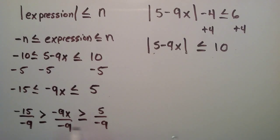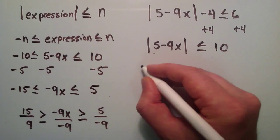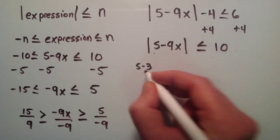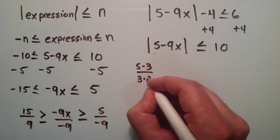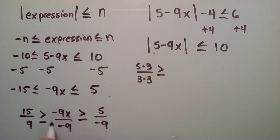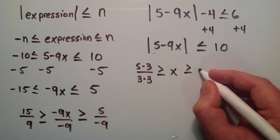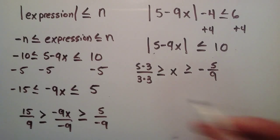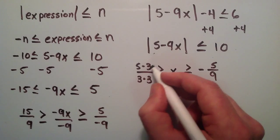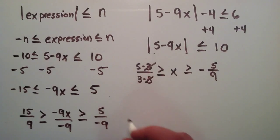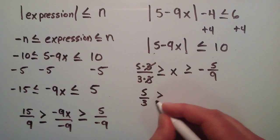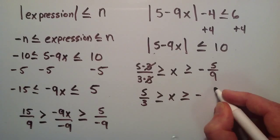Let's simplify. A negative divided by a negative is positive, so we get rid of those negative signs. 15 can be rewritten as 5 times 3, and 9 as 3 times 3. We have greater than or equal to sign, then negative 9x divided by negative 9 gives us just x, and 5 divided by negative 9 is negative 5 over 9. For 15 over 9, we cancel the common factor of 3 to get 5 over 3. So we have 5 over 3 is greater than or equal to x, which is greater than or equal to negative 5 over 9.